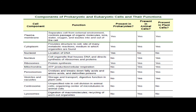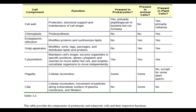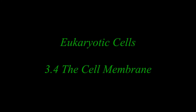This table provides the components of prokaryotic and eukaryotic cells and their respective functions. This ends Chapter 3, Section 3.3. In our next video, we'll read Section 3.4, The Cell Membrane.